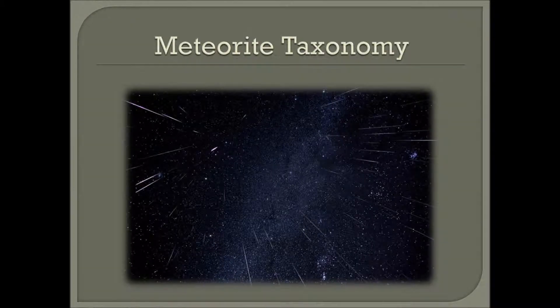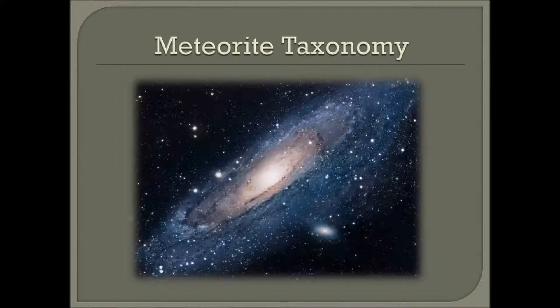Meteorite taxonomy is an attempt to group objects of similar type. While there is agreement on broad meteorite groupings, disagreements arise when discussing higher order systems that attempt to relate dissimilar materials through common processes, nebular reservoirs, or parent bodies.